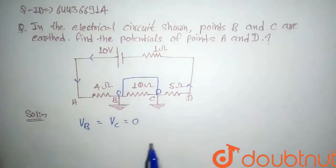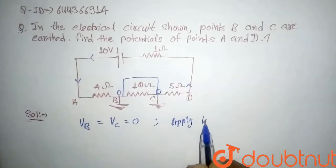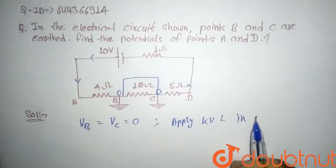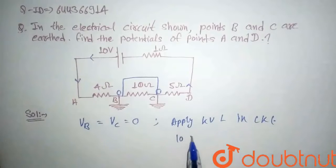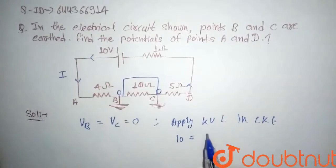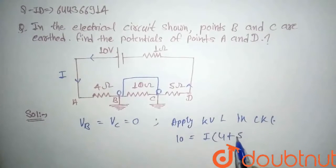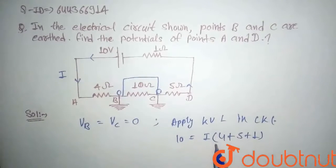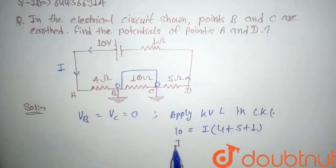So here we will apply KVL in the circuit. Then we will get this is 10 volt, and it will be equal to... let's say current flowing through this circuit is I, then it will be equal to I into 4 plus 5 plus 1, because this is equivalent resistance.